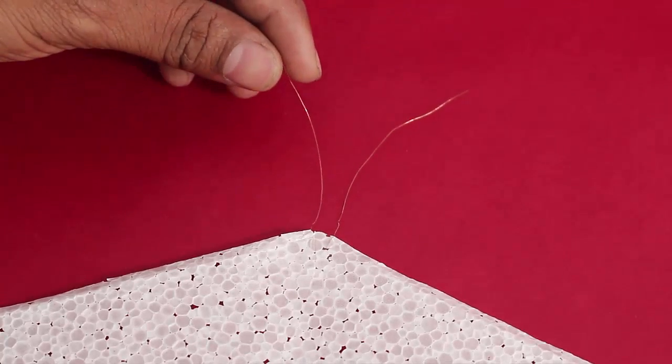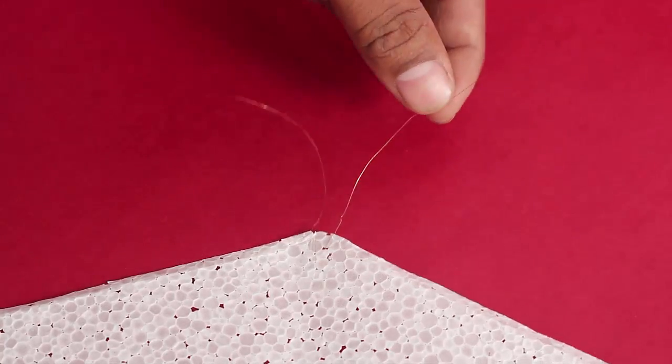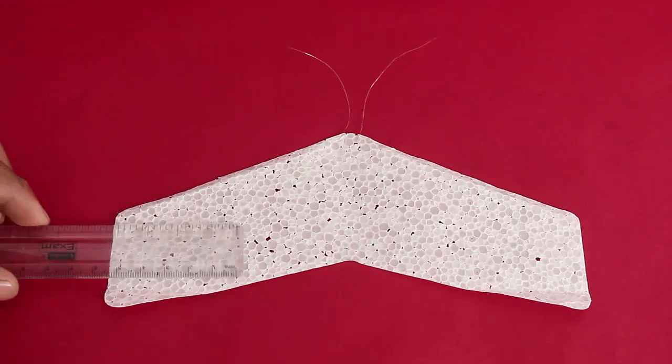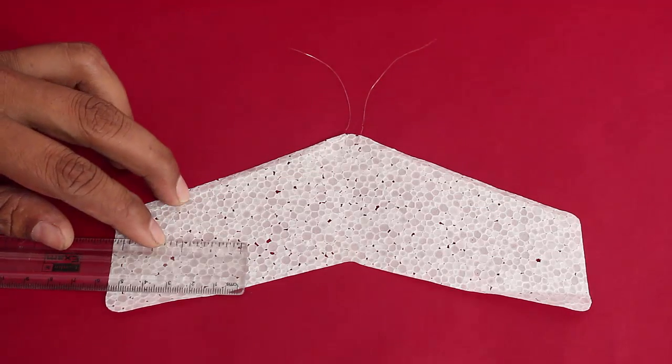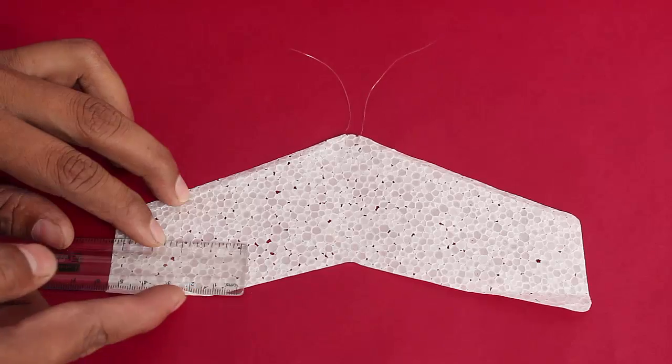These two thin hair-like copper wires help in balancing this glider. The dimensions have a span of about 20cm.